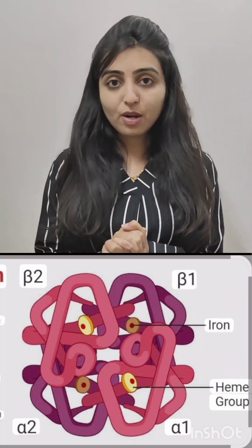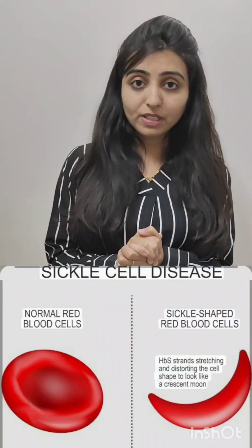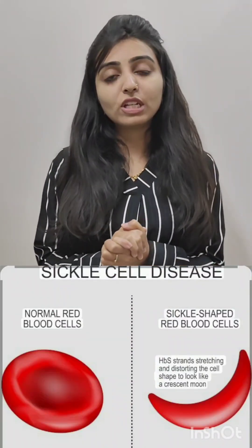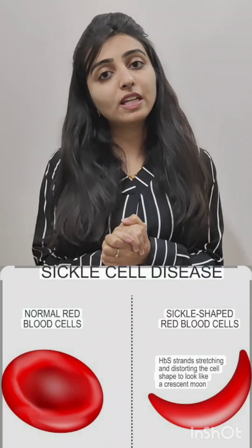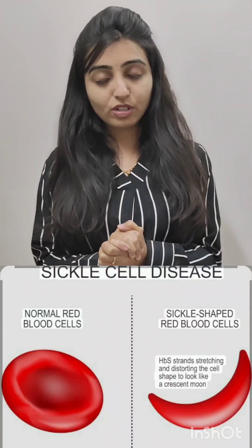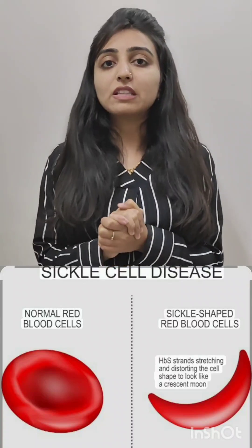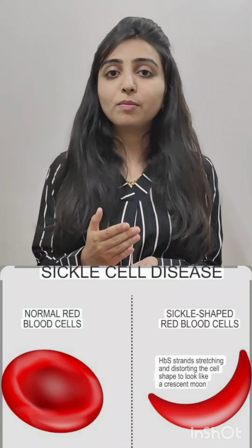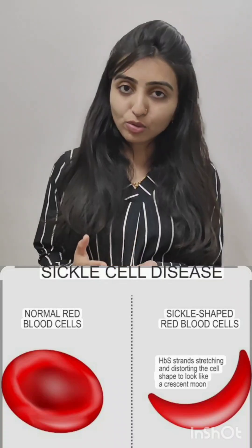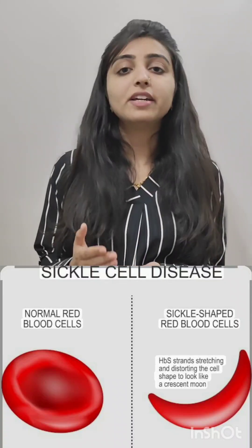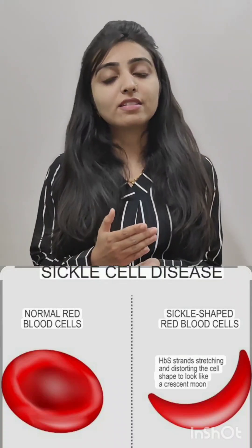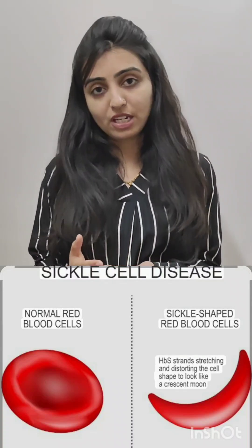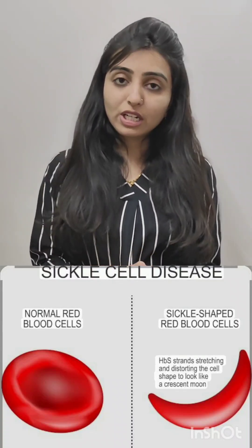HbA consists of two alpha chains and two beta chains. Now, in sickle cell anemia, it is basically a hemoglobin disorder in which there is substitution of valine at the place of glutamic acid at the sixth position in the beta chain.